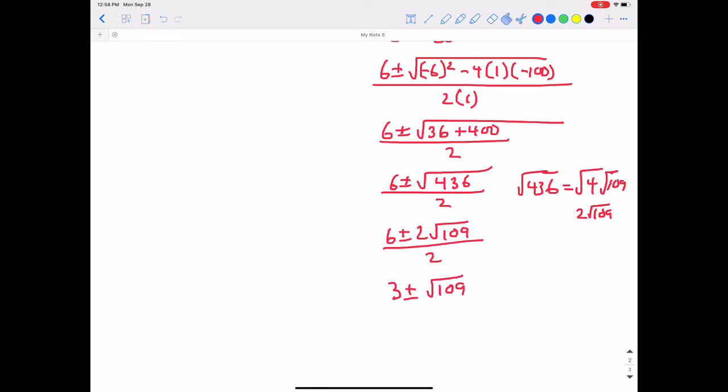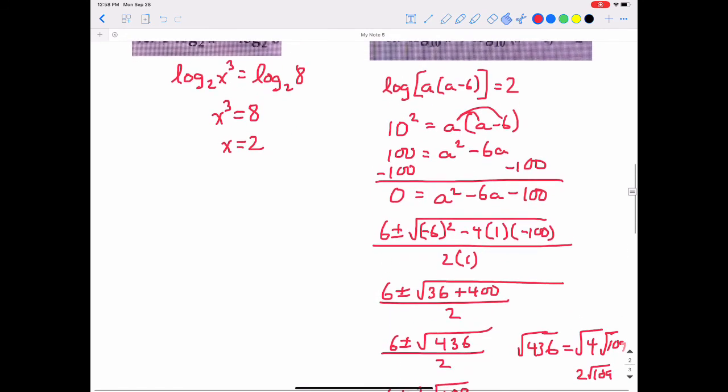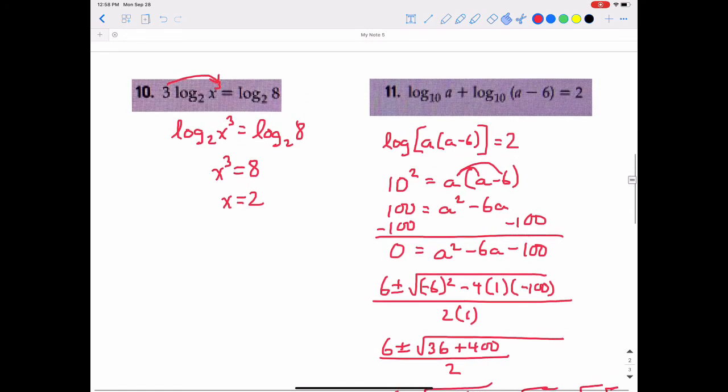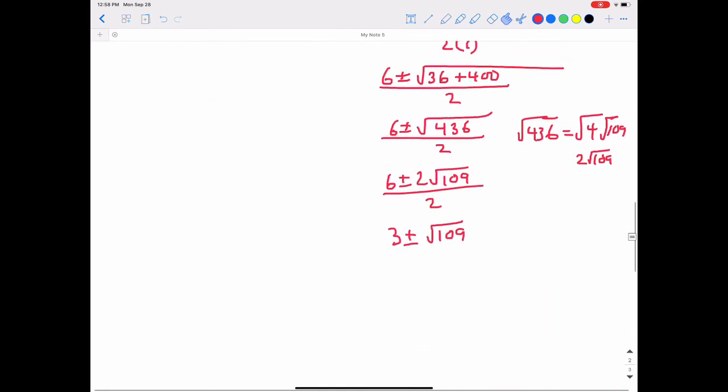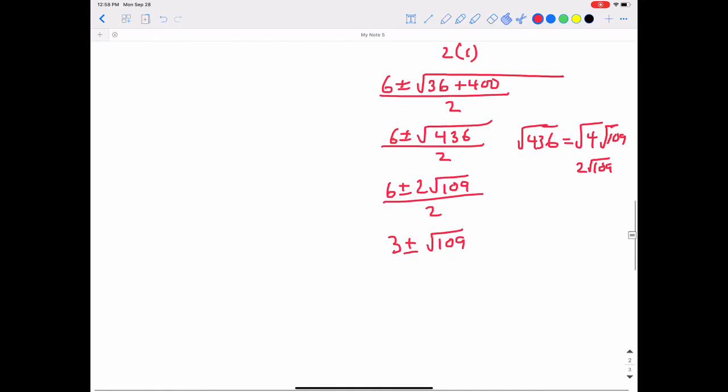Now, we have to think about this. Is this a possible answer? So going all the way back to the original problem, we have the log base 10 of a and the log base 10 of a minus 6. So square root of 109 is a little bit over 10, which means we cannot use the negative portion of that because we would be taking the logarithm of a negative number, which we already know is not possible. So the actual answer is going to be just the plus portion of it. So 3 plus the square root of 109.